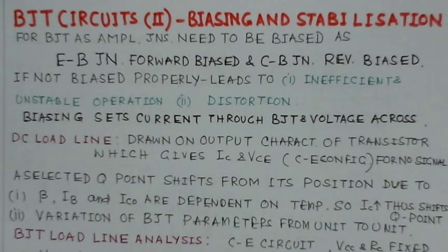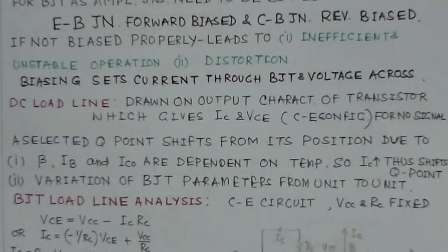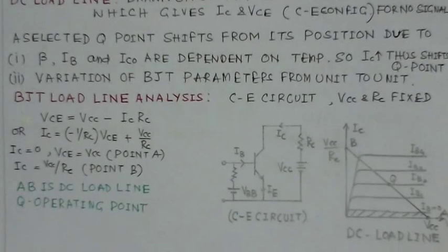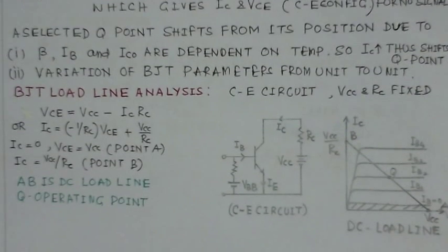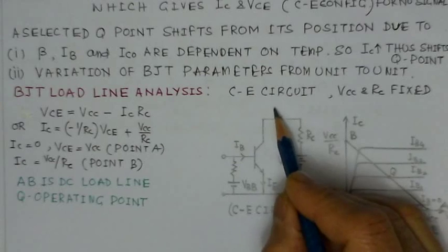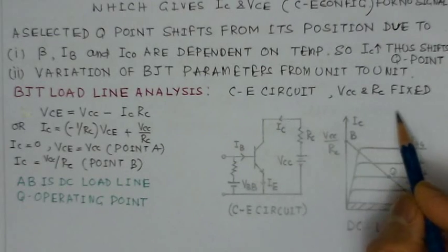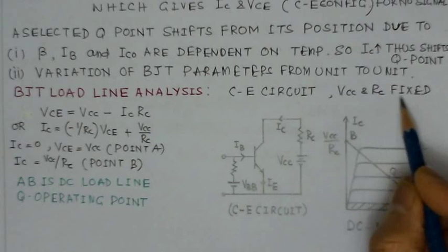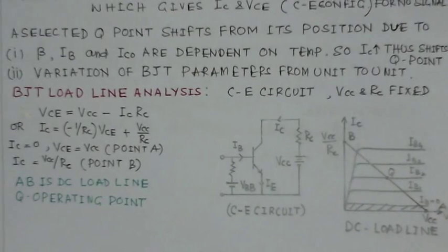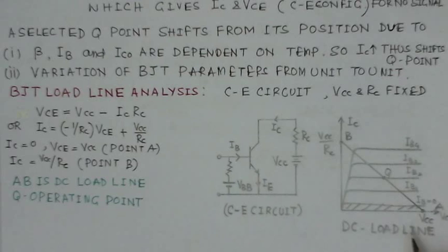To maintain a stable Q point, suitable bias arrangements need to be used. For the load line analysis of the common emitter configuration, VCC and RC are the fixed parameters. The output characteristics for the common emitter configuration show curves for fixed base currents.